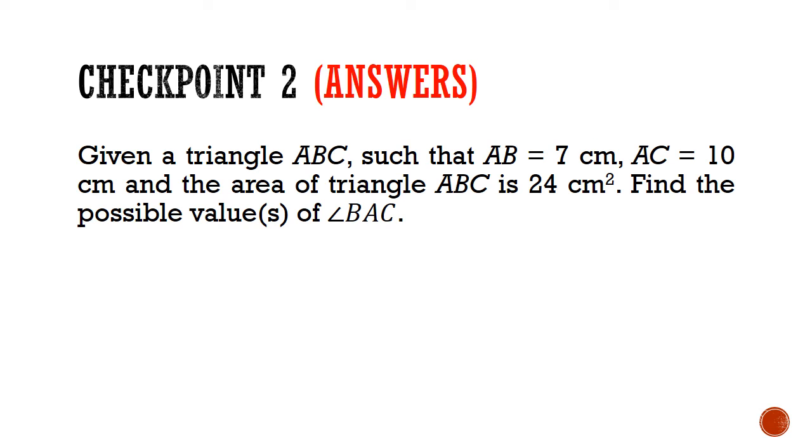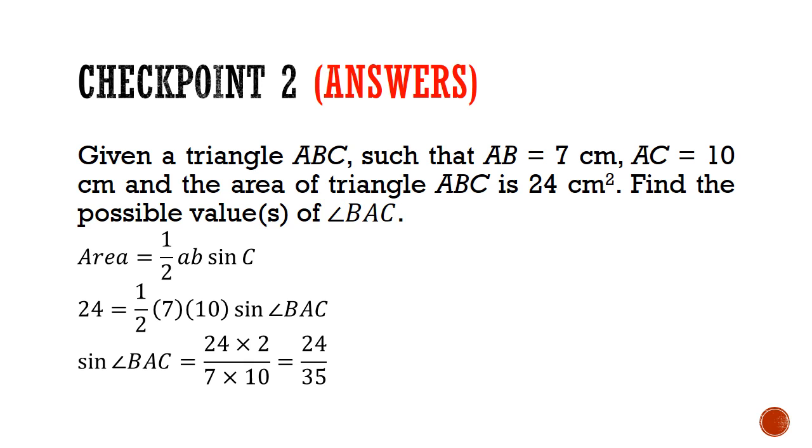Let's walk through the solution. We can use the area formula, half AB sine C. Then we substitute area equals 24. We'll let A equals 7 and B equals 10, the order here doesn't matter. This tells us that sine of angle BAC is equals to 24 over 35.